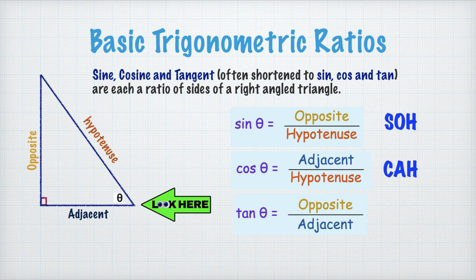And then tan theta is equal to opposite over adjacent. So the O is for the opposite, while the A is for the adjacent.